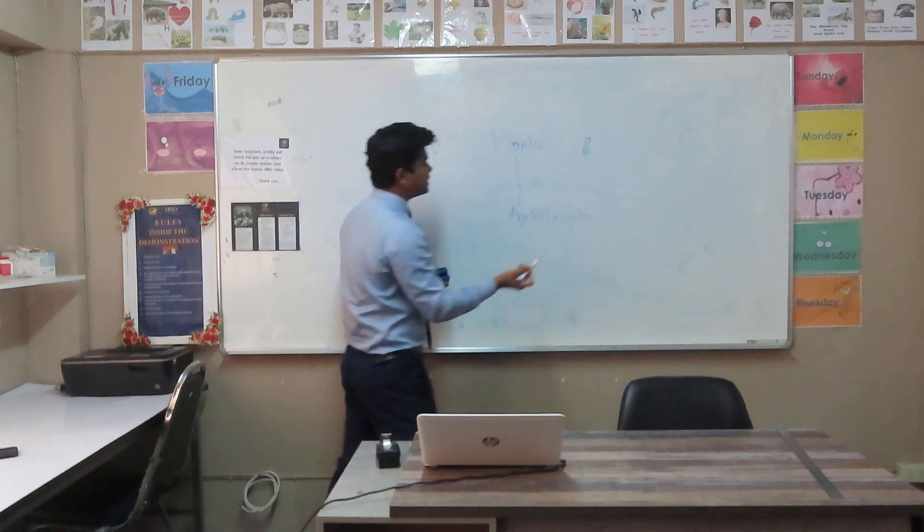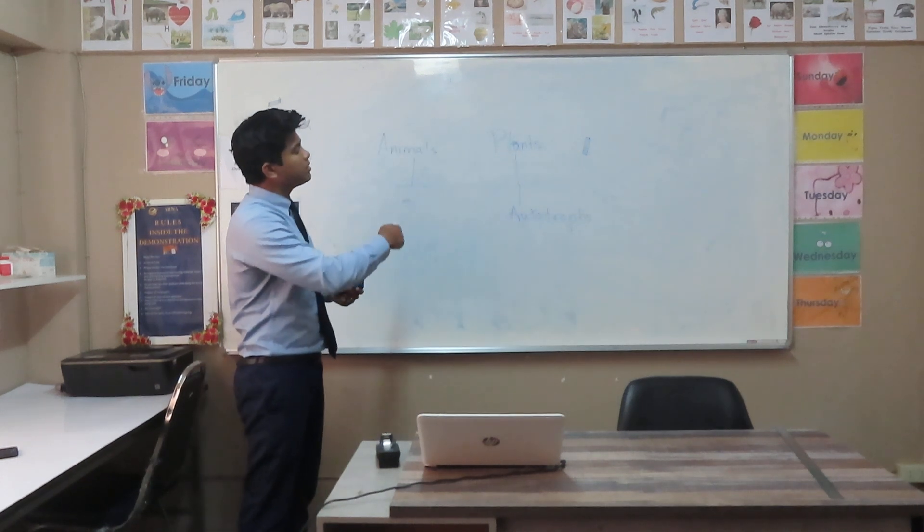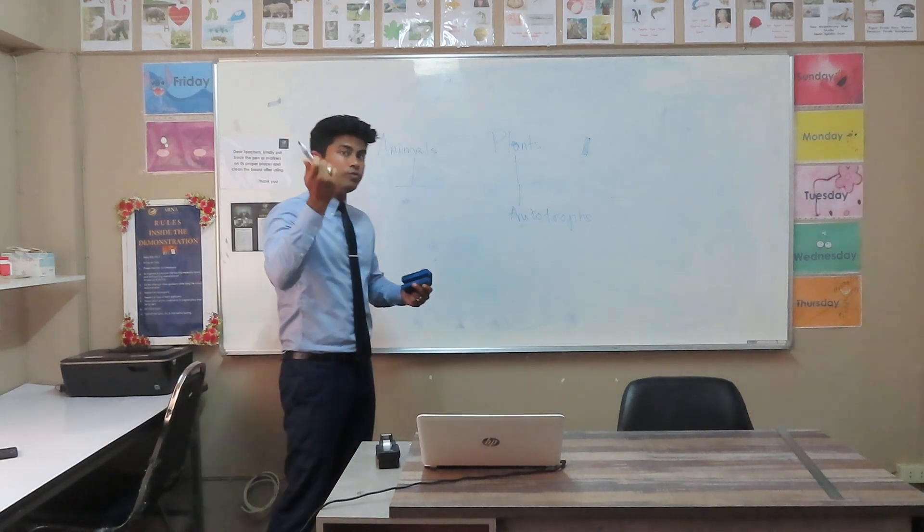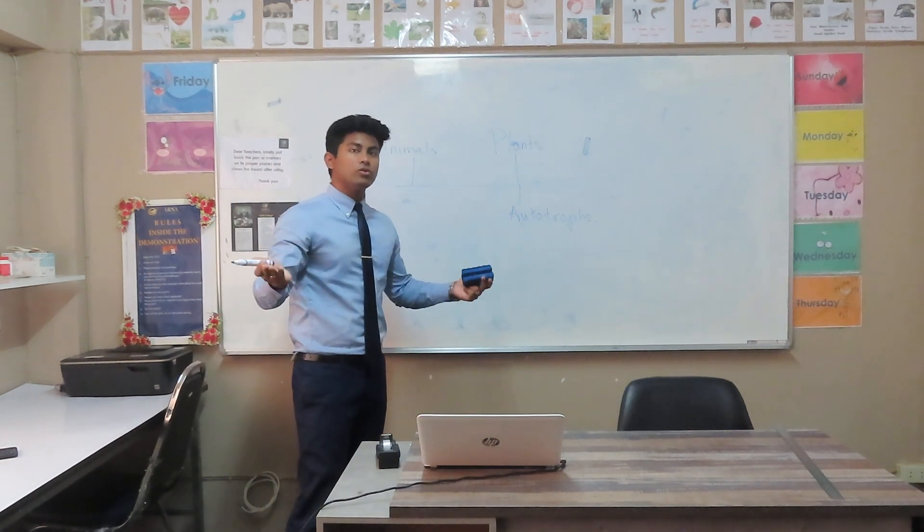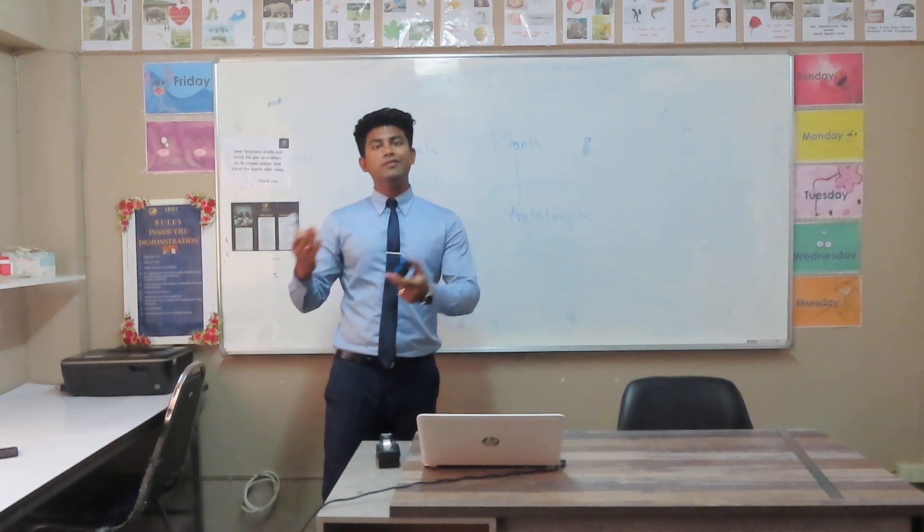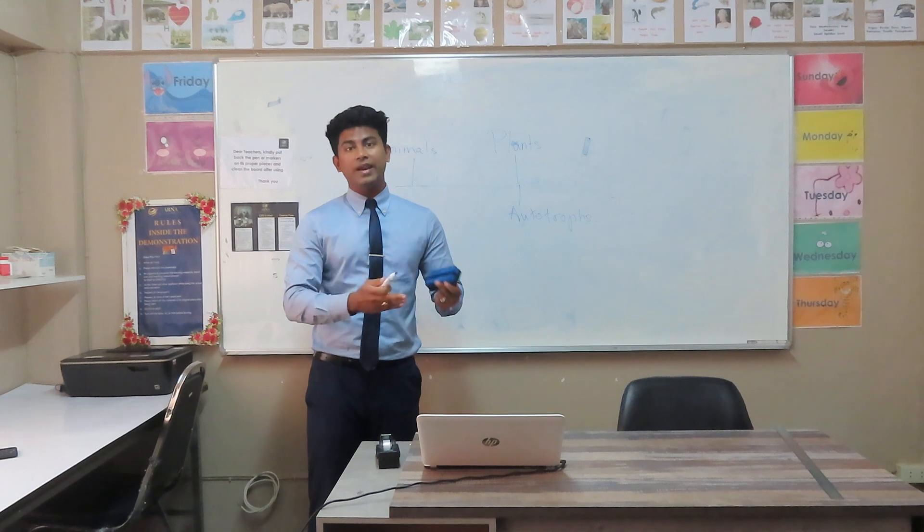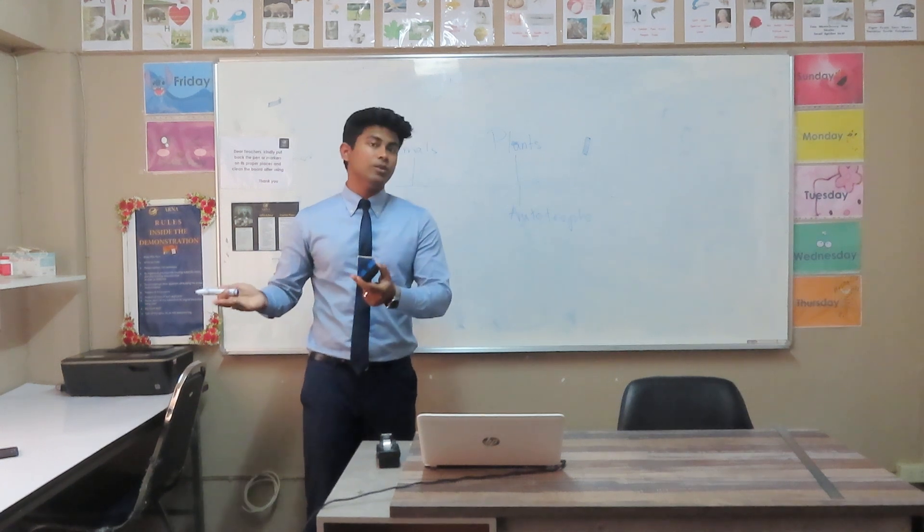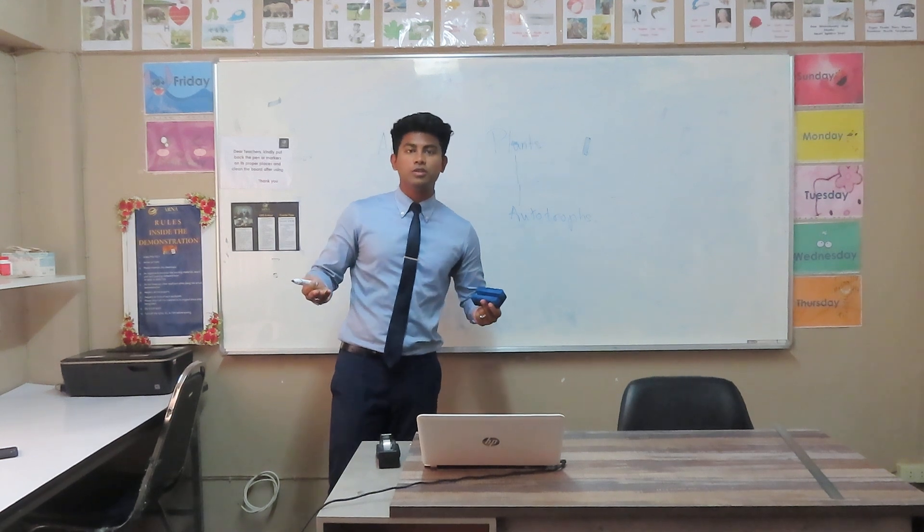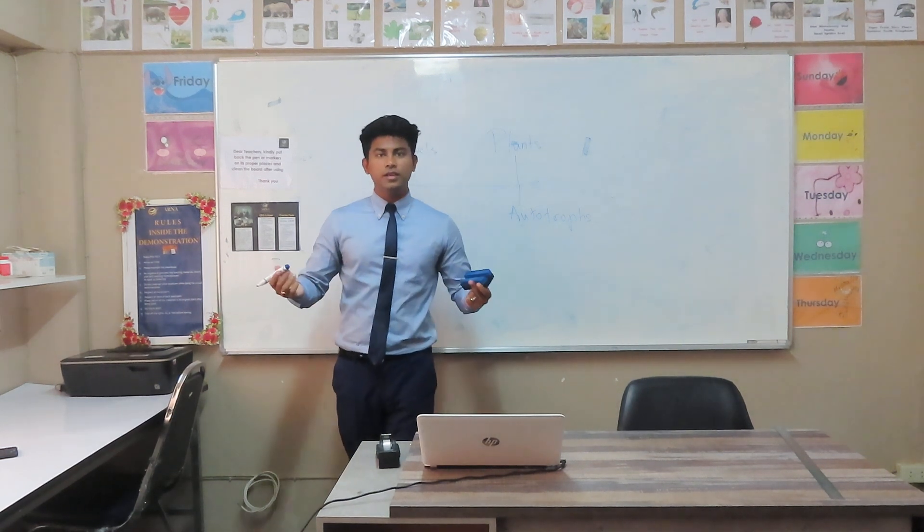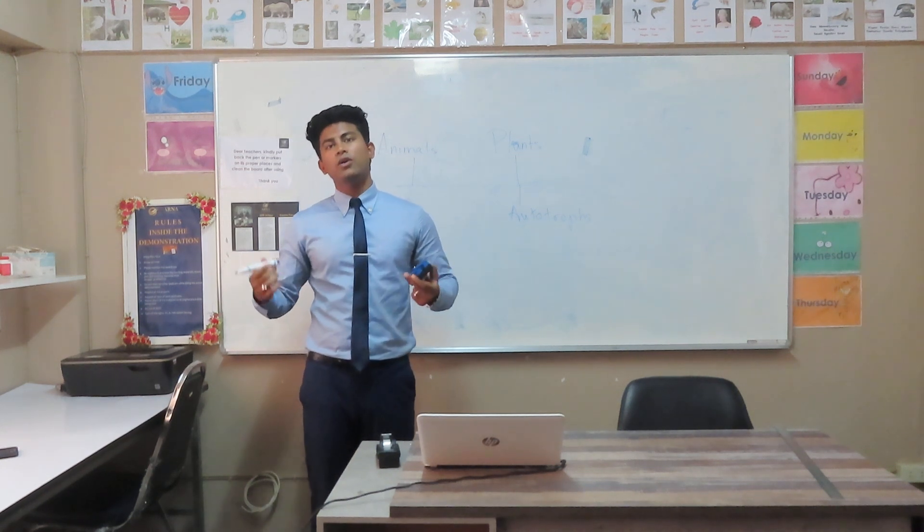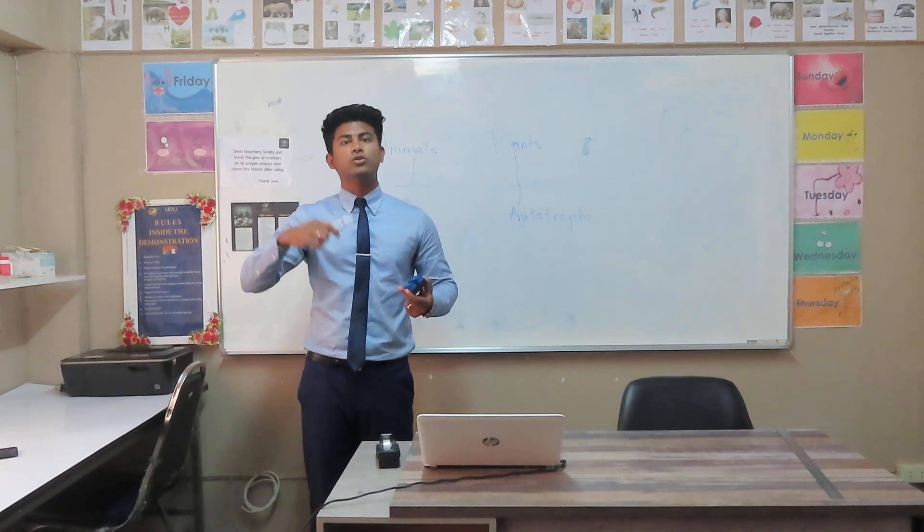Obviously, the difference between plants and animals is that plants can make their own food. So they are known as autotrophs. And animals, they need to consume other living things because they cannot prepare their own food. So they are known as heterotrophs. Can you spell with me? Heterotrophs. H-E-T-E-R-O-T-R-O-P-H-S.